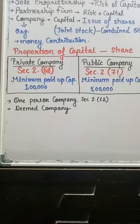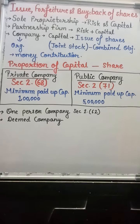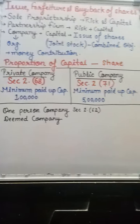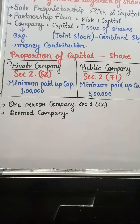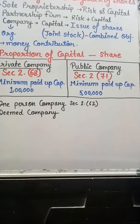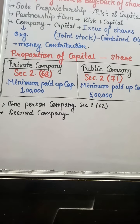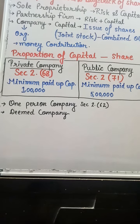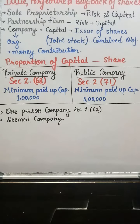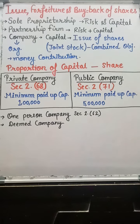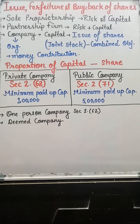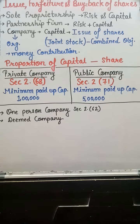There is a proviso: where two or more persons hold one or more shares in a company jointly, they shall for the purpose of this clause be treated as a single member. This is like partners — if two people want to invest money in a single share, they are counted as one person, not two, because only one share was issued by the company. Members are counted on the basis of shares.